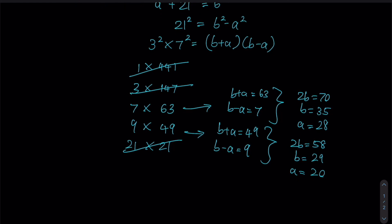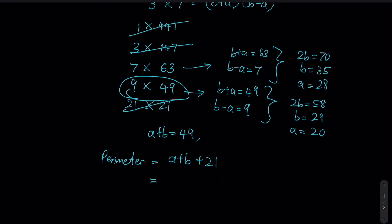So based on the working here, you can see that since a + b is 49, then my perimeter would therefore be a + b + 21, which would be 49 + 21 to give us an answer of 70. And therefore, this would be the least possible value of our perimeter for this question.